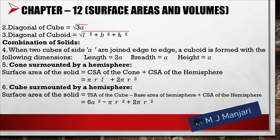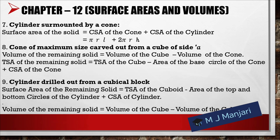Fifth, cone surmounted by a hemisphere: surface area = curved surface area of cone + curved surface area of hemisphere = πrl + 2πr². Sixth, cube surmounted by a hemisphere: surface area = total surface area of cube − base area of hemisphere + curved surface area of hemisphere = 6a² − πr² + 2πr². Next, cylinder surmounted by a cone: surface area = curved surface area of cone + curved surface area of cylinder = πrl + 2πrh.